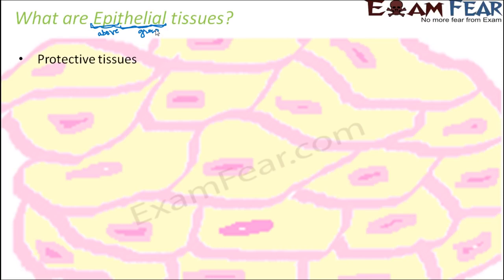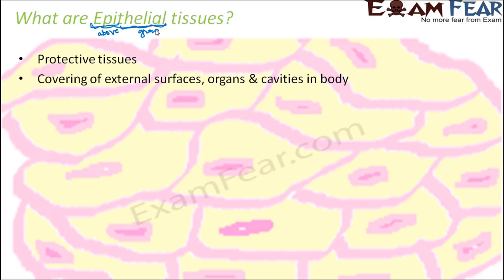Epithelial tissues are the protective tissues and they are generally above all other tissues. They basically act as covering — they cover other organs or cavities, so they act as protective tissues. Covering of external surfaces, organs and cavities in the body. It not only means covering the outermost surface; it can even act as a covering for internal organs like heart, lungs, and kidney. So all those organs also need to be protected, and even for open cavities inside the body, we see epithelial tissue.